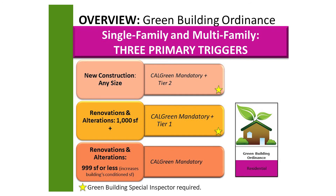There are three primary triggers that require projects to meet the green building ordinance. The first is new construction of any size; projects meeting that trigger must meet Cal Green mandatory plus tier two requirements. The second trigger is renovations and alterations of a thousand square feet or more, which requires Cal Green mandatory plus tier one requirements. The third trigger is renovations and alterations of 999 square feet or less, where it is required that the building condition to square footage is increased, and the requirement is Cal Green mandatory.